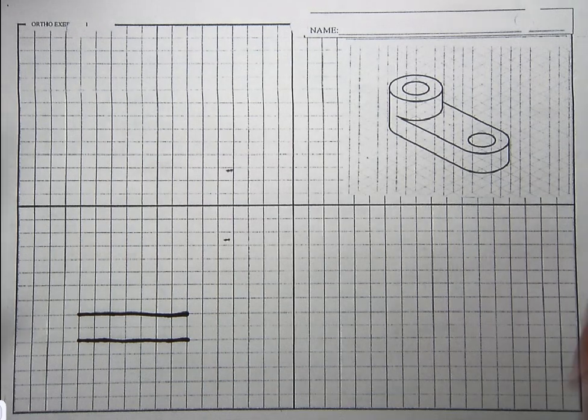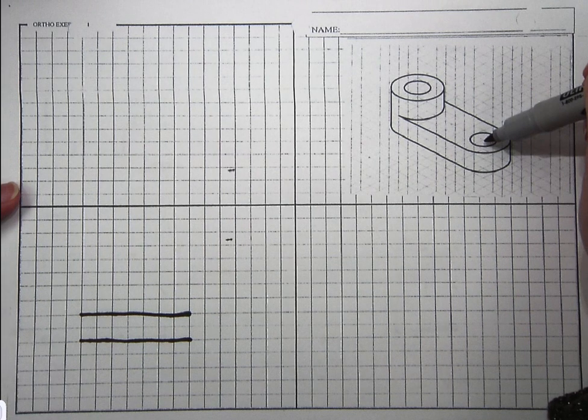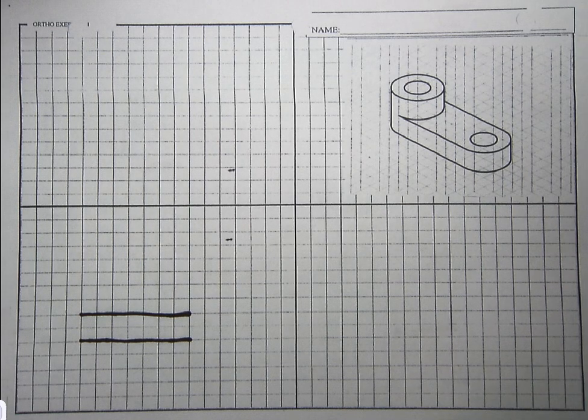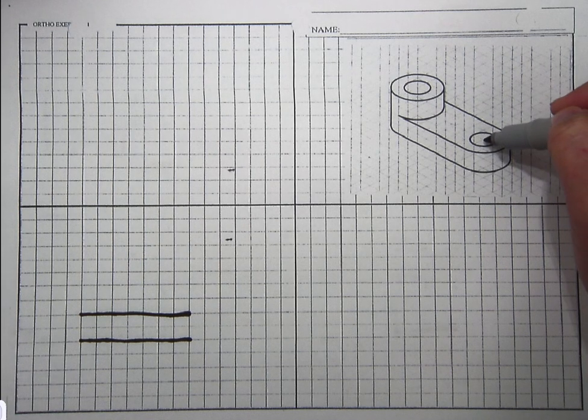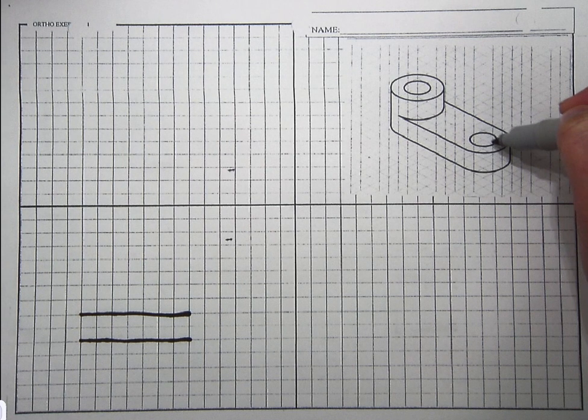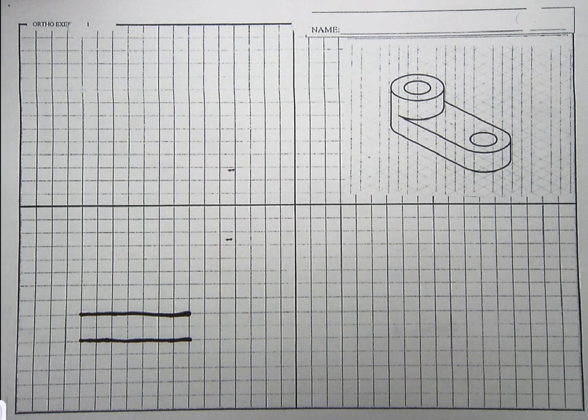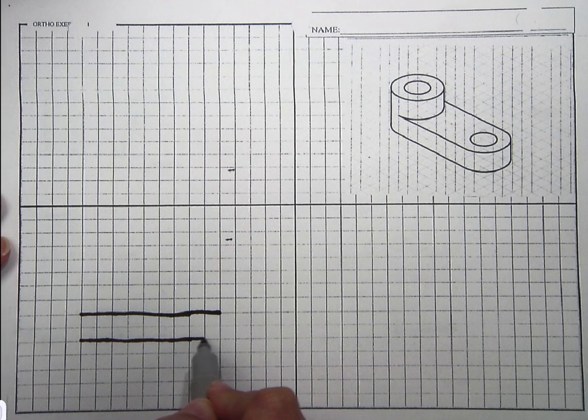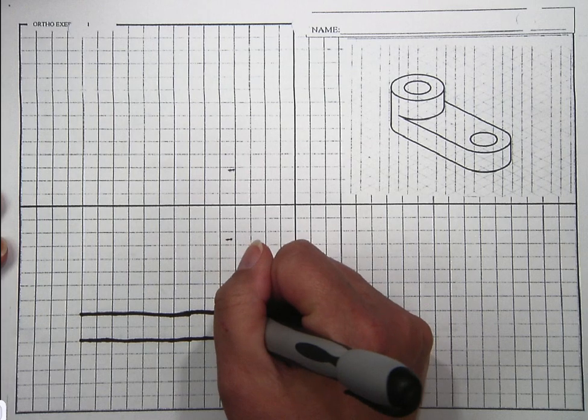Alright, so now I know from here to here was 7. So I just wanted to start off with that bottom part. Okay, I know that this is my center point. So I go 1, 2. I'm going to continue on with this same line, 2 more.